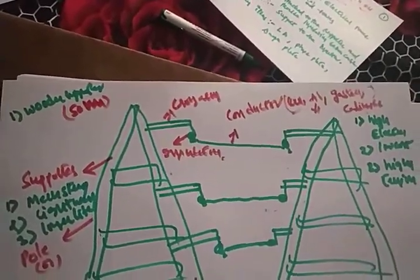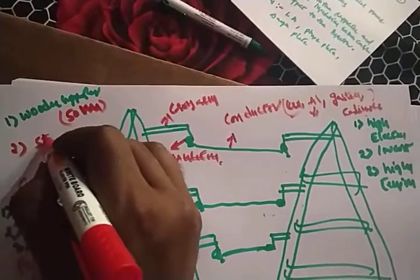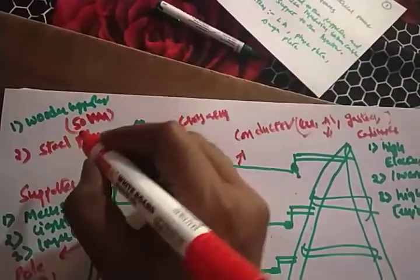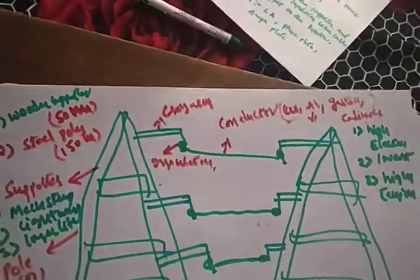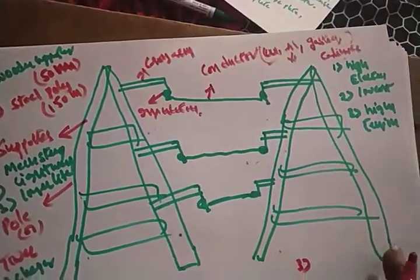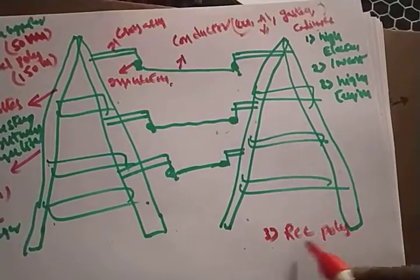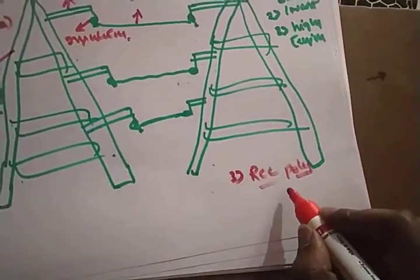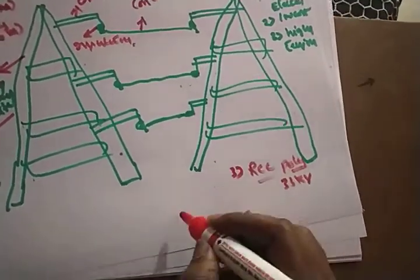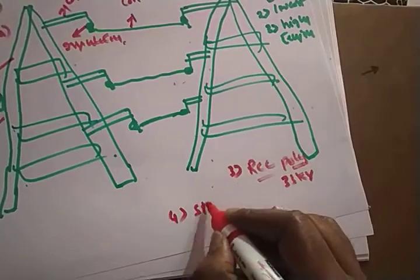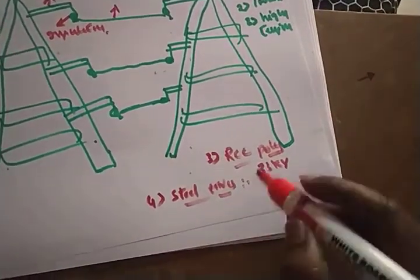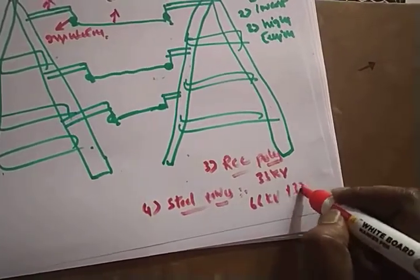After wooden supporters, steel poles were used — they can be used for up to 150 meters in length. Then there are RCC poles — reinforced concrete poles. Nowadays we use concrete poles for 33 kV transmission systems. For higher voltages like 66 kV and 132 kV transmission systems, we use steel towers.